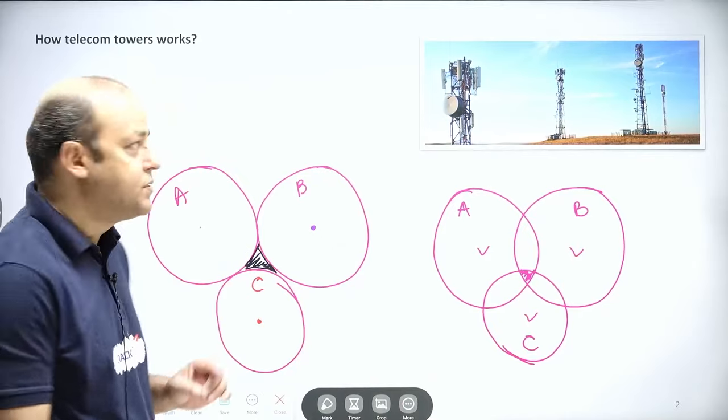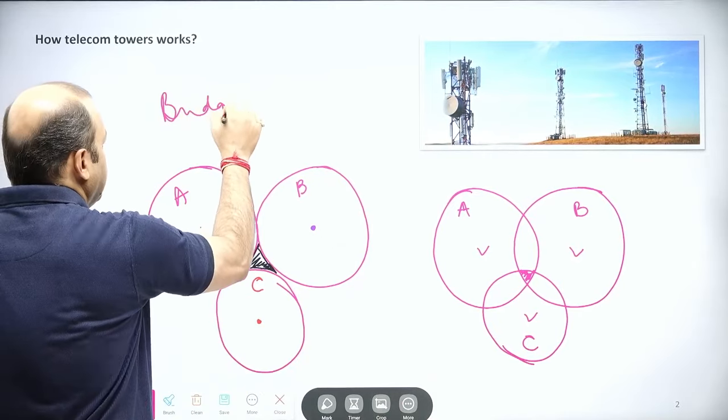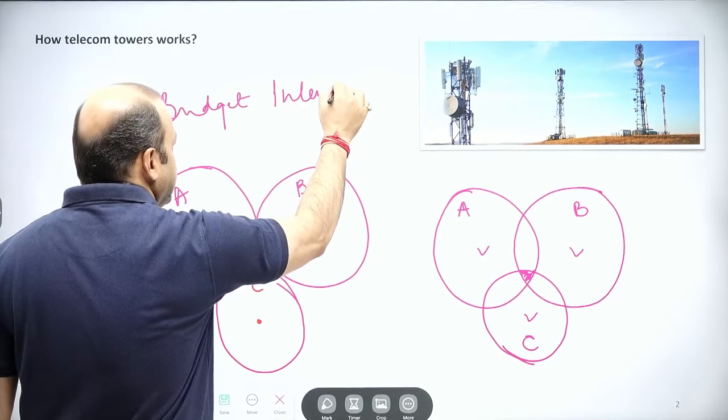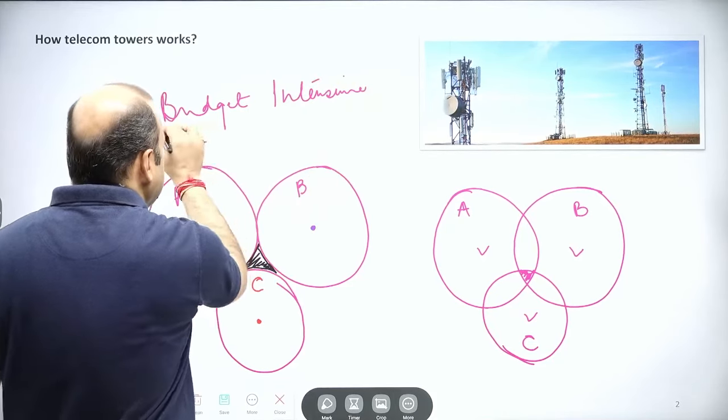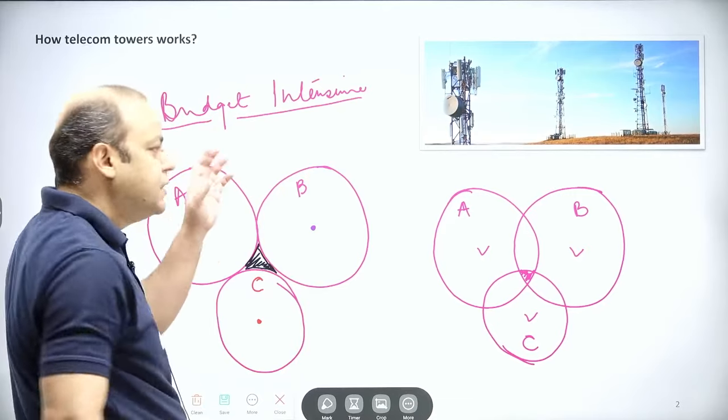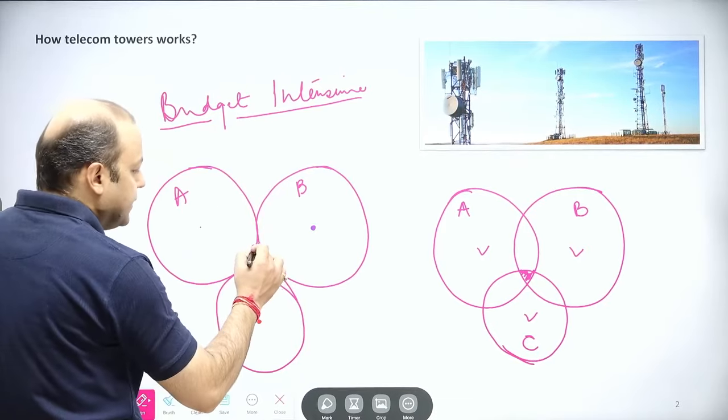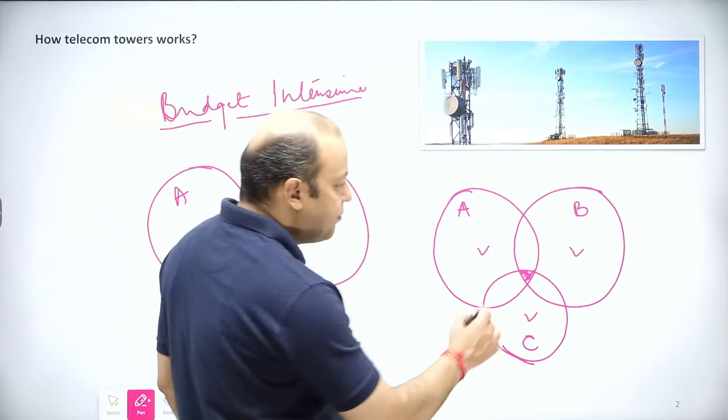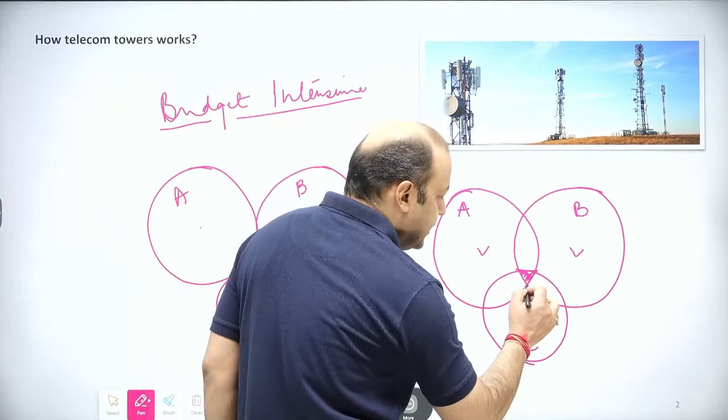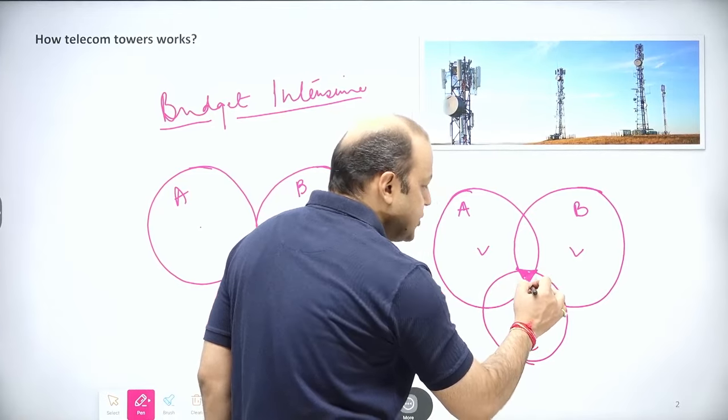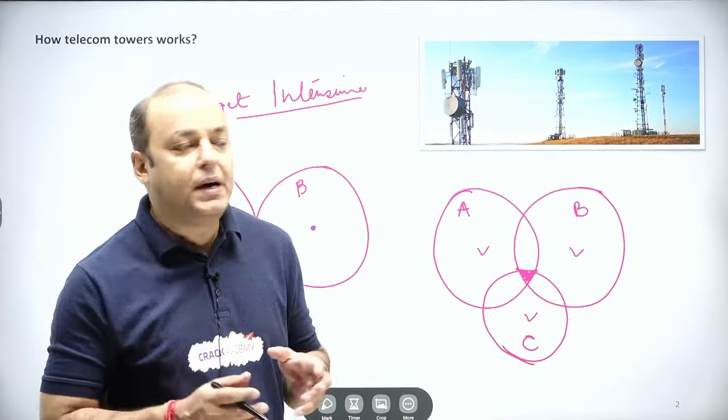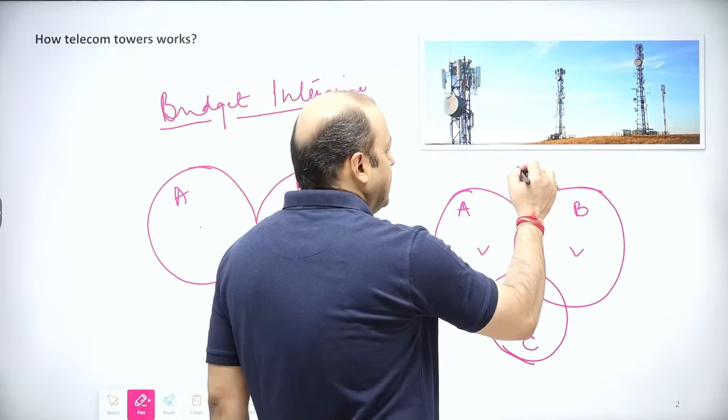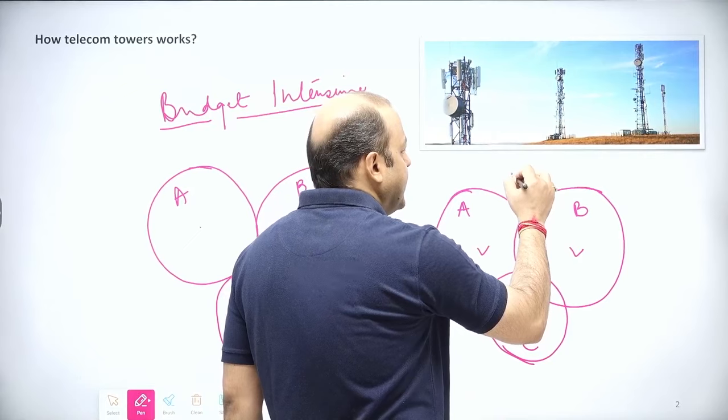So the problem is solved, but again as I have said, this particular placement of telecom tower is budget-intensive—that means a limited amount of budget is allocated; this is a costly process. So here there was a significant part which was not covered, and here we are wasting—in fact, this much, this area is actually being served by three different towers. So actually we are wasting the resources.